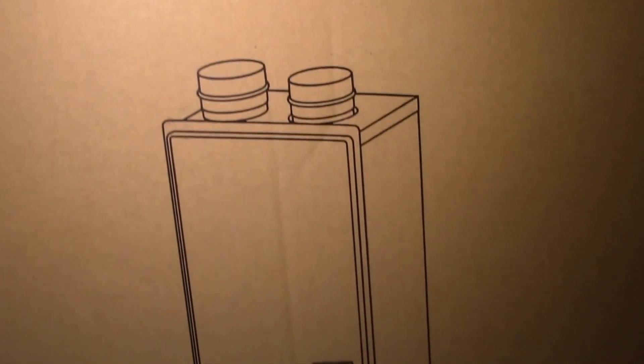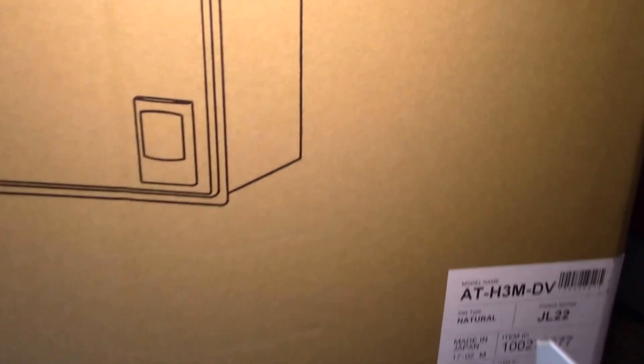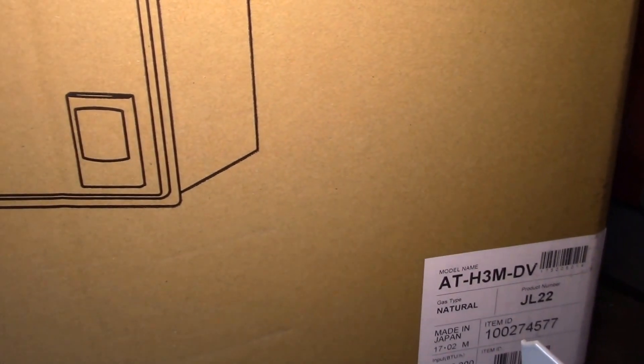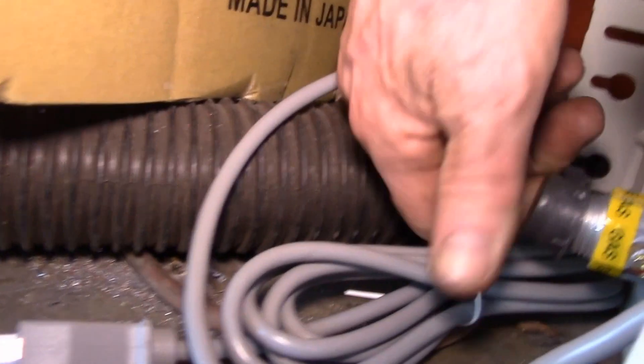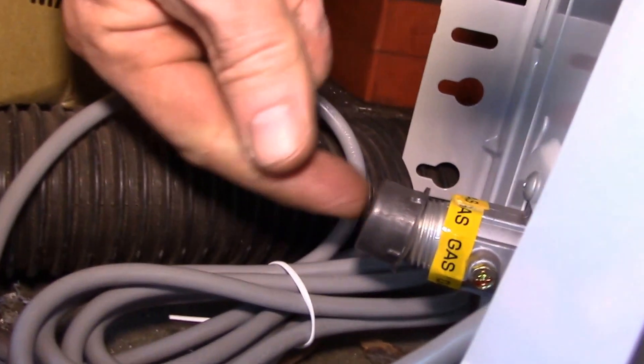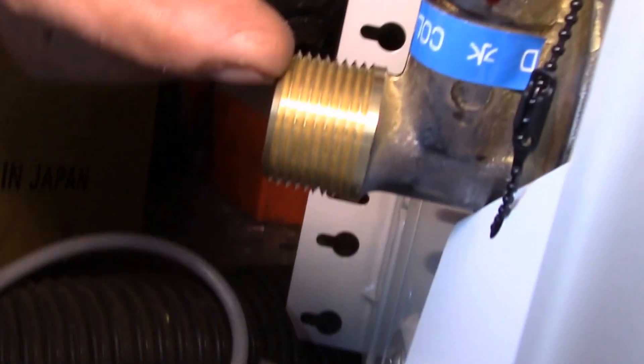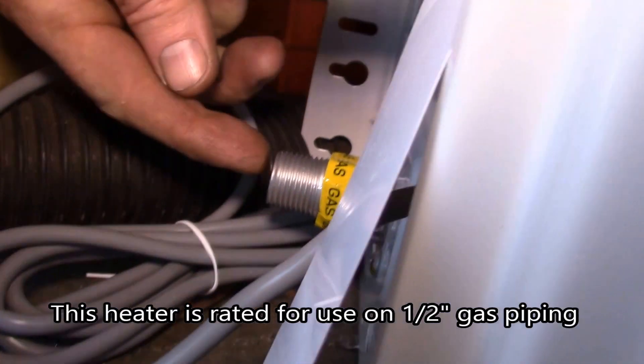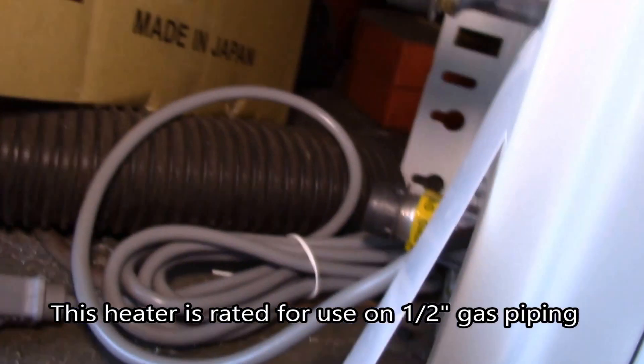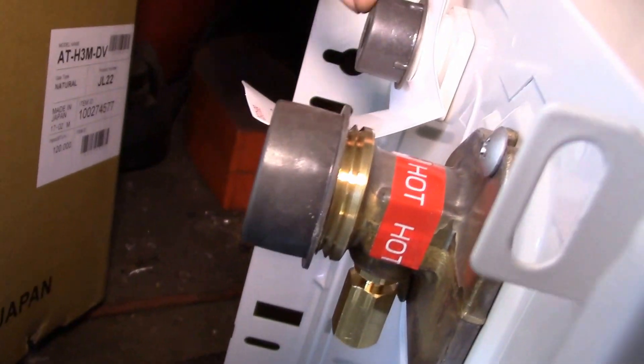And it should have, yeah there we go, this one does have the half inch pipe thread. There's your three-quarter inch on the water and half inch on the gas. So that's the unit I wanted. And then there's your half inch condensate drain right there, three-quarter on the hot and the cold, half on the gas.